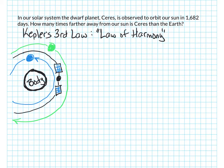This is an example problem using Kepler's Third Law, which is also known as the Law of Harmony. In our solar system, the dwarf planet Ceres is observed to orbit our Sun in 1,682 days. How many times farther away from our Sun is Ceres than the Earth?